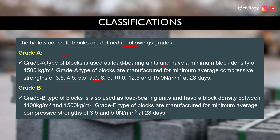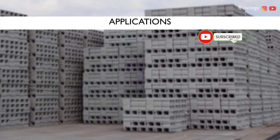Grade B type blocks are also used as load-bearing units and have a block density between 1100 to 1500 kg/m³. These blocks are manufactured for minimum average compressive strengths of 3.5 and 5.5 N/mm².